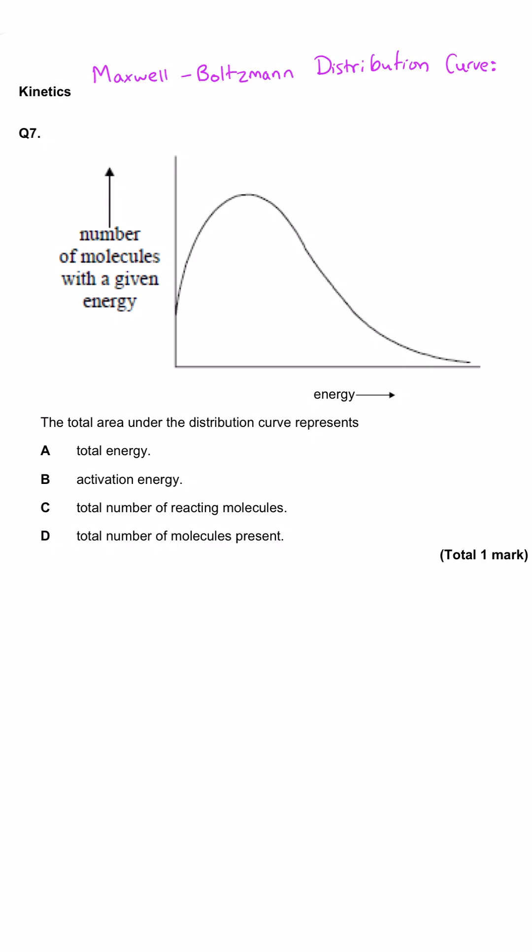Here we're being shown a Maxwell-Boltzmann distribution curve with the number of molecules with a given energy on the y-axis and amount of energy on the x-axis. The question is asking us what the total area under the distribution curve represents.